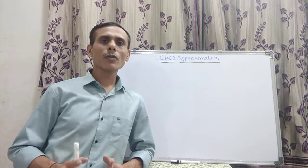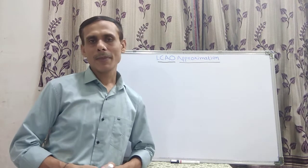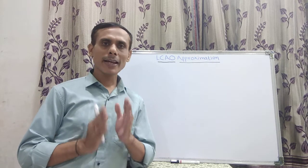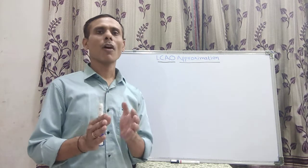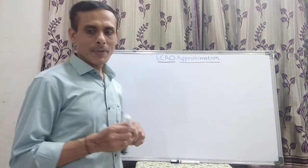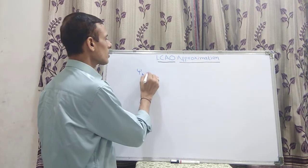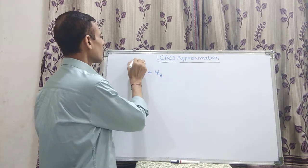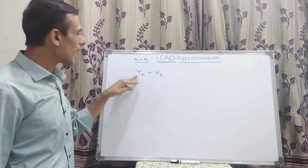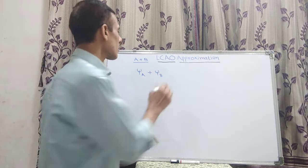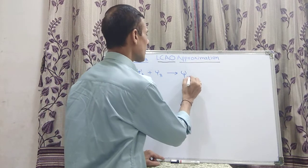Today we are going to discuss the LCAO approximation. As per this method, the formation of orbitals is because of the linear combination of atomic orbitals which combine to form a molecule. In this method, if we consider the wave functions of two atoms, psi A and psi B, they denote atoms A and B. When these two wave functions combine, there is a formation of molecular orbital, that is psi MO.